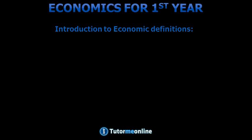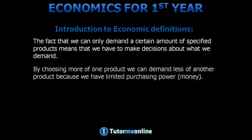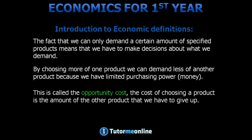The fact that we can only demand a certain amount of specified products means that we have to make a decision about what we demand. By choosing more of one product we can demand less of another product because we have limited purchasing power, or money. This is called the opportunity cost. The cost of choosing a product is the amount of the other product that we have to give up.